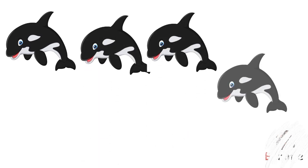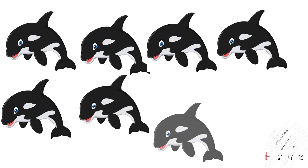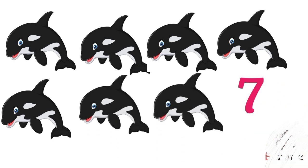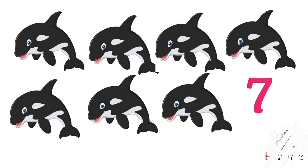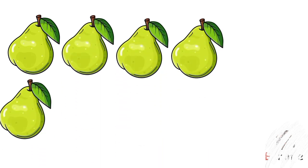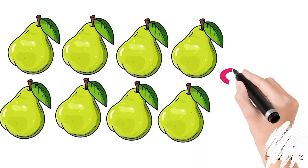One through six. Seven dolphins. One, two, three, four, five, six, seven. Eight. Eight pairs.